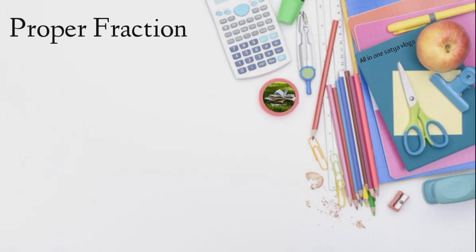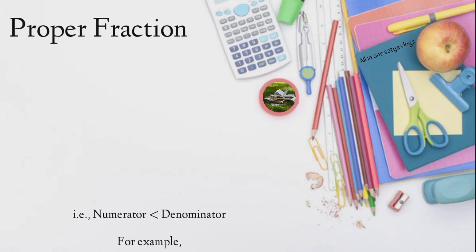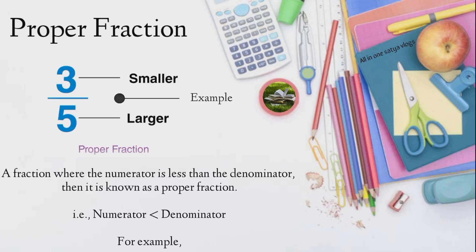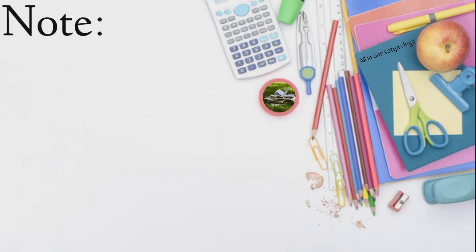Proper fraction. A fraction where the numerator is less than the denominator, then it is known as a proper fraction. I.e., numerator less than denominator, for example. Note: The value of proper fraction after further simplification is always less than one.